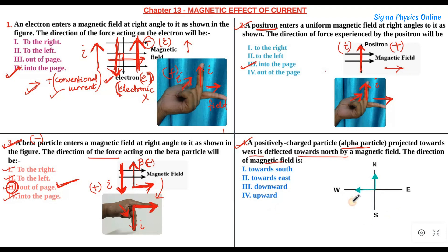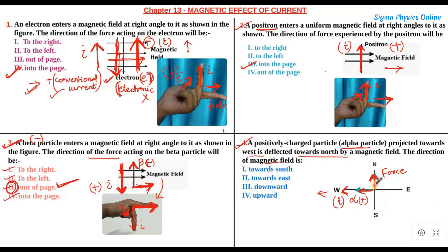Here it is given that there is a positively charged alpha particle moving towards the west. Under the action of a magnetic field, the positively charged alpha particle got deflected towards the north. Since the alpha particle is moving towards west, the current direction in this case is towards the west. And since the alpha particle got deflected towards the north, that is the direction in which the force acted on it. We have to find out the direction of the magnetic field.